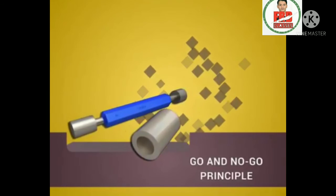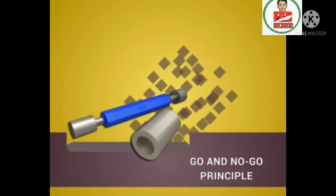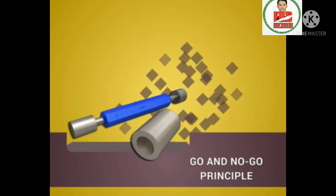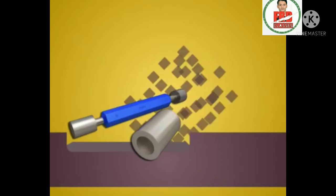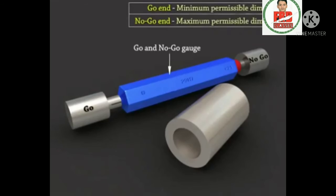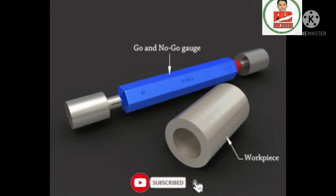Go and no-go principle: in this video we are going to see the principle of the go and no-go gauge. Let us see the 3D model of the go and no-go gauge. The dimensions of the go end are equal to the minimum permissible dimension, and that of the no-go end is equal to the maximum permissible dimension of the work piece.